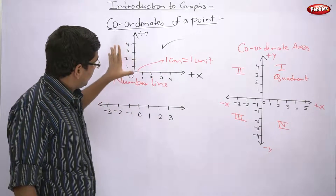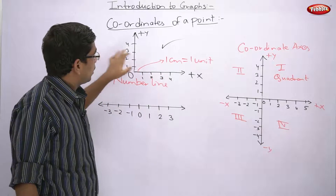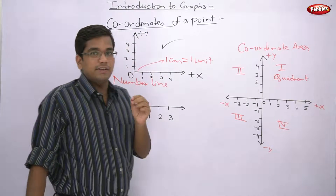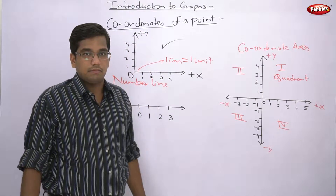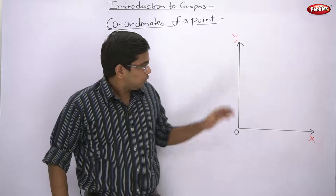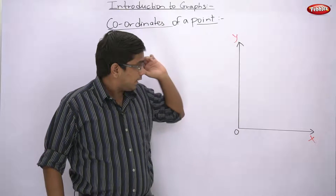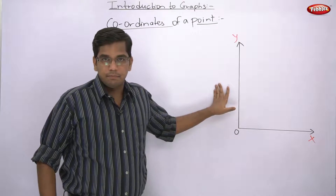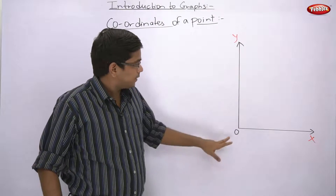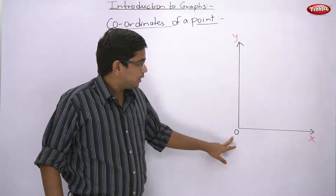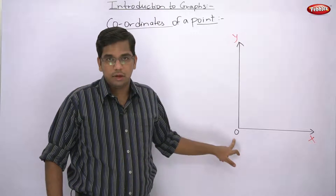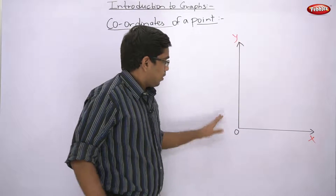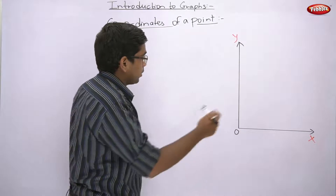Now, the x and y axis together are called coordinate axes. This is your coordinate axis — x and y. Both of them intersect at point O, or 0 as we call it — the origin.